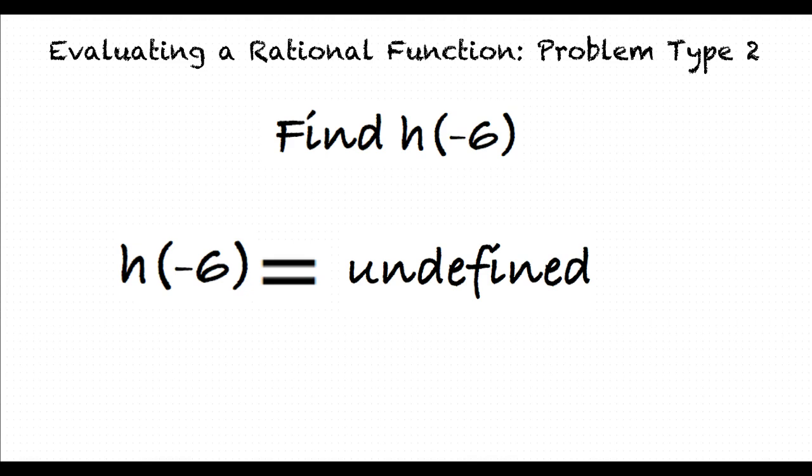Okay, I think I understand this topic now. So to evaluate a rational function, we substitute the given value for x into the function and simplify. If the answer is a rational number, then that is the final answer. But if the denominator simplifies to 0, then our function is undefined at that value. That's right. Thank you.